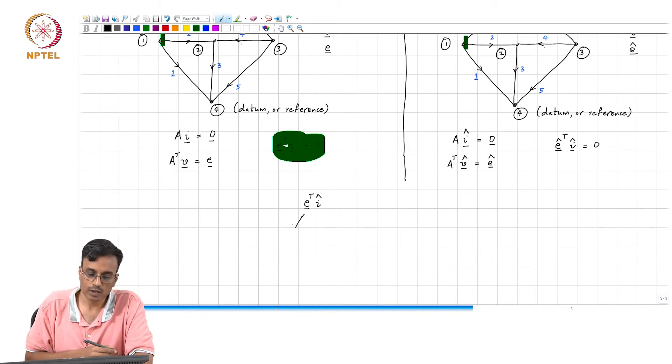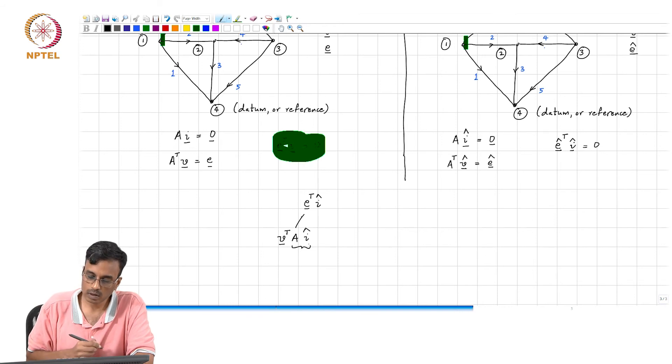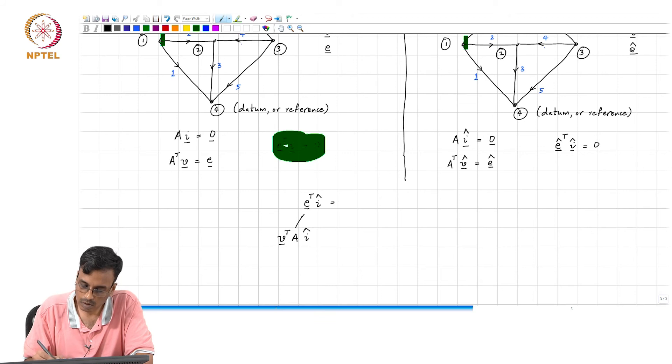It is V transpose times A, and what is I hat? This times I hat. So, what is this equal to? And this is, oh well this is the 0 vector.